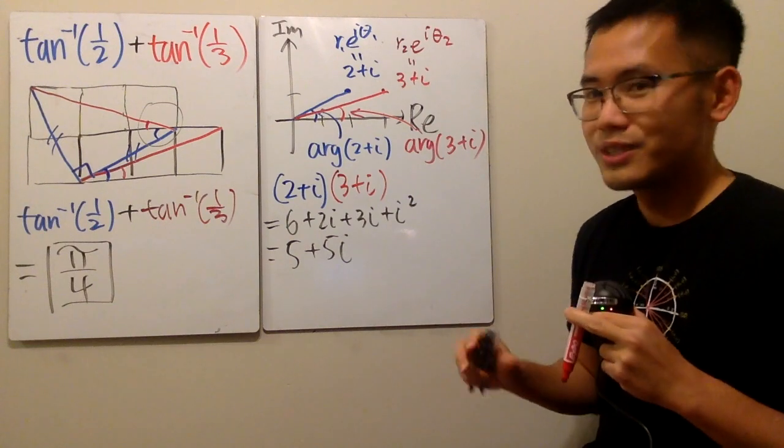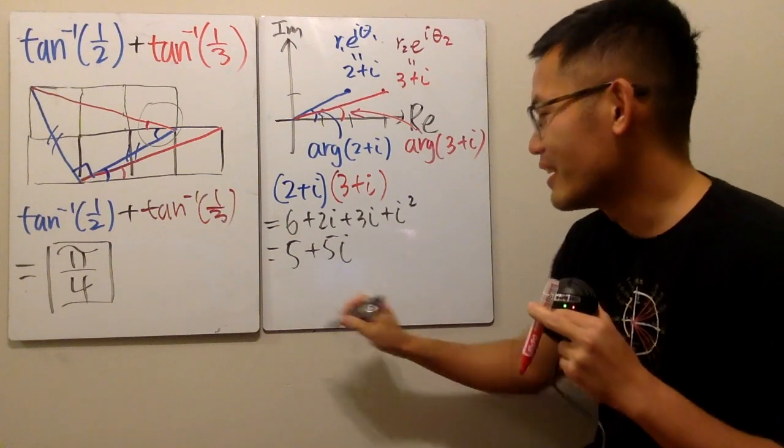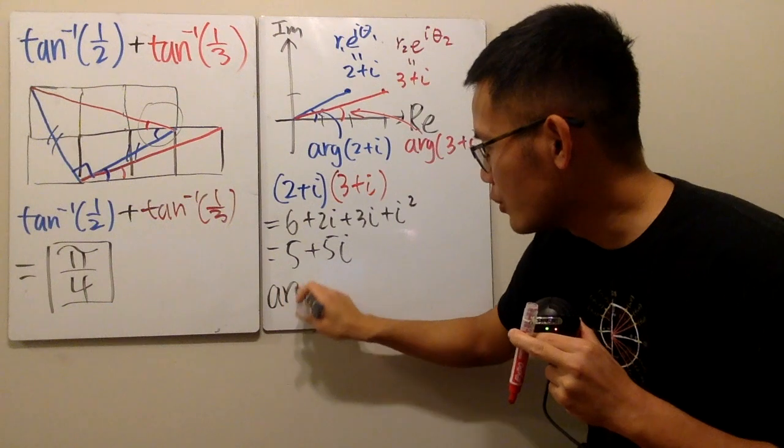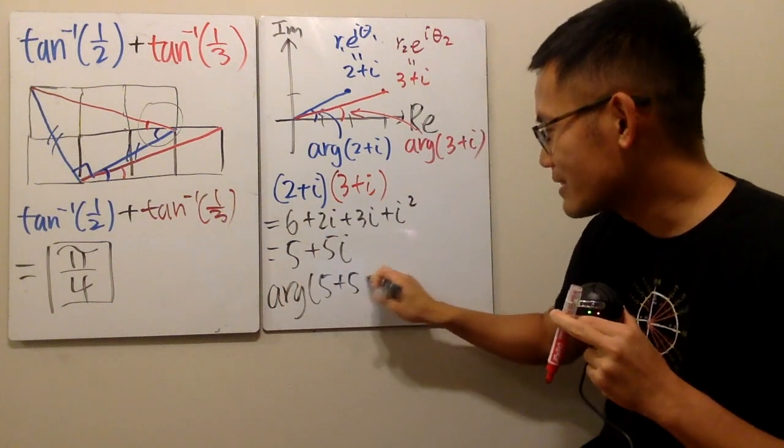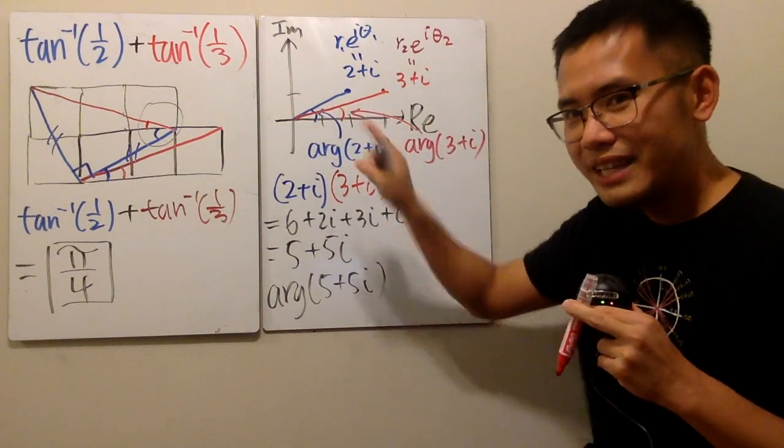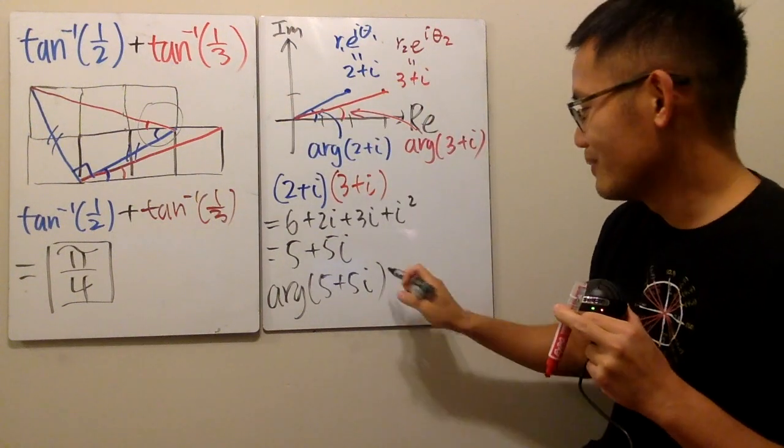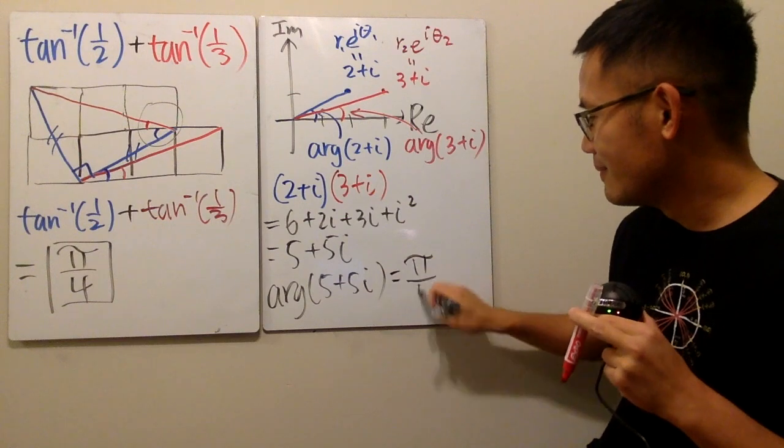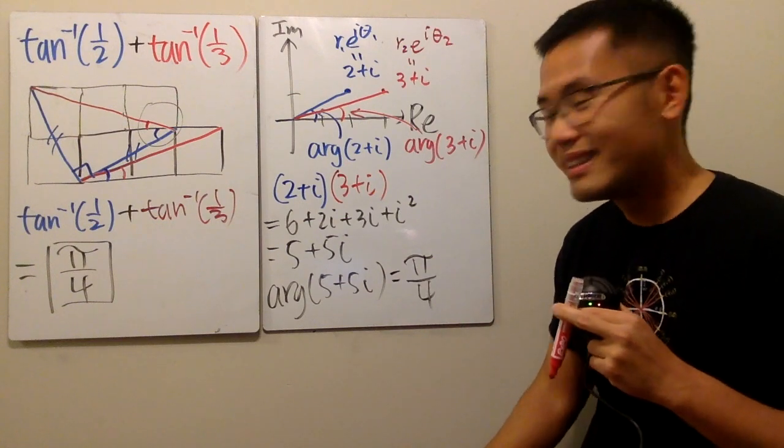In the end, again, we're just talking about the angle that we care. So, pay attention to the argument of this complex number. All right, this and that are the same. So, of course, the angle will be pi over 4. And you are done. That's it.